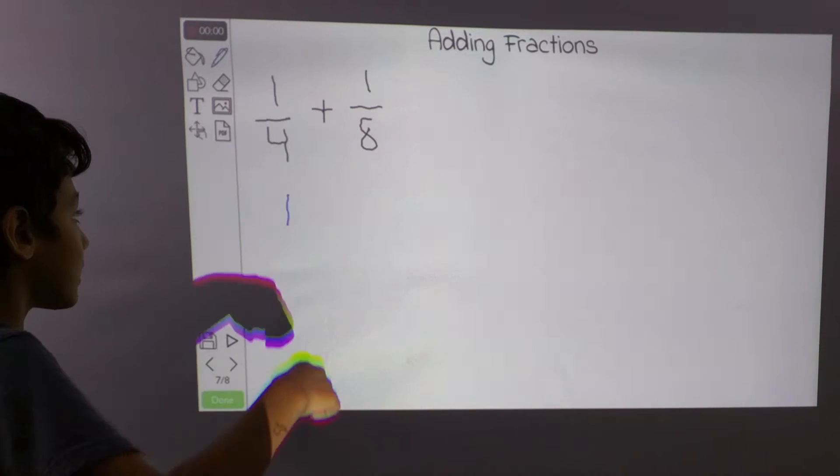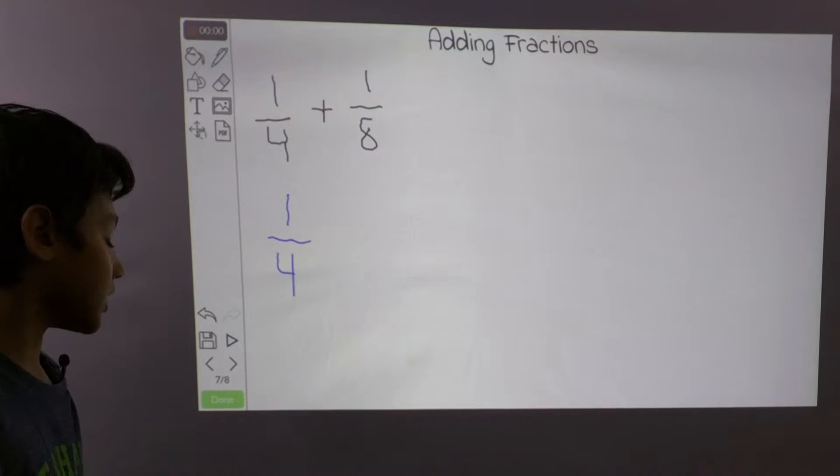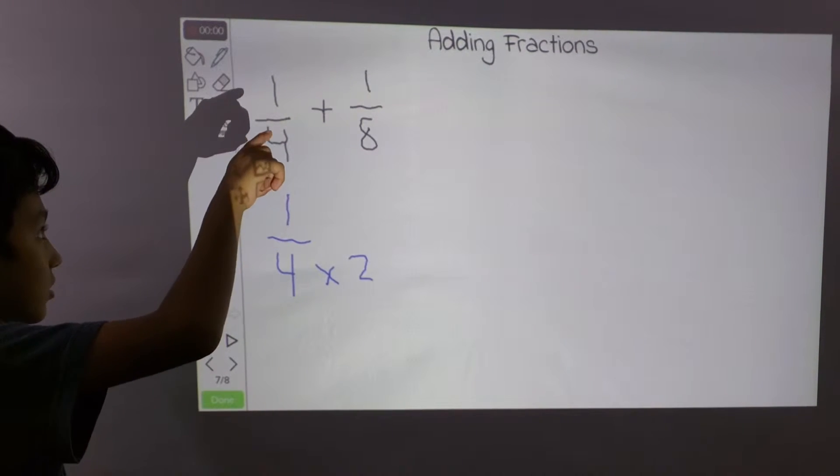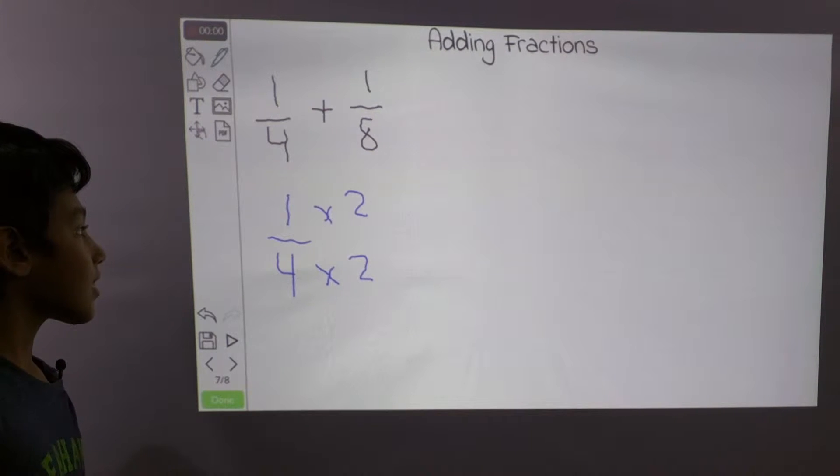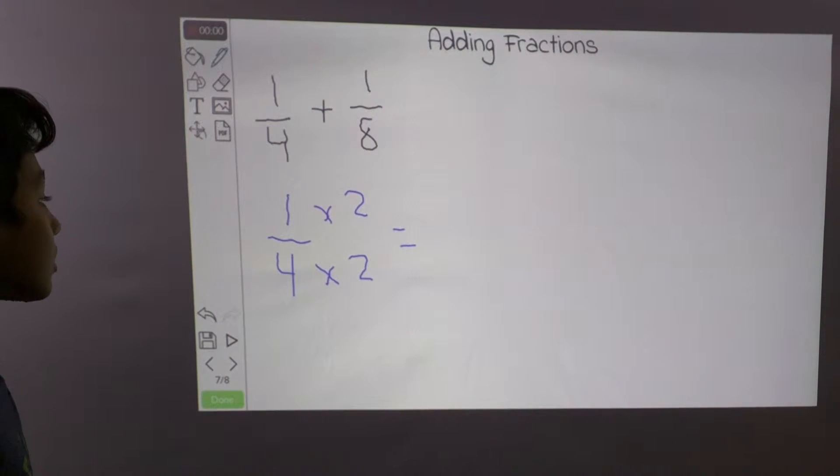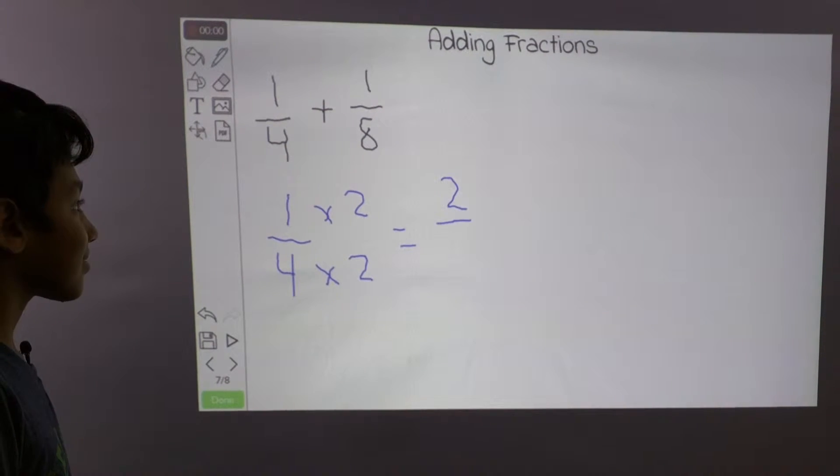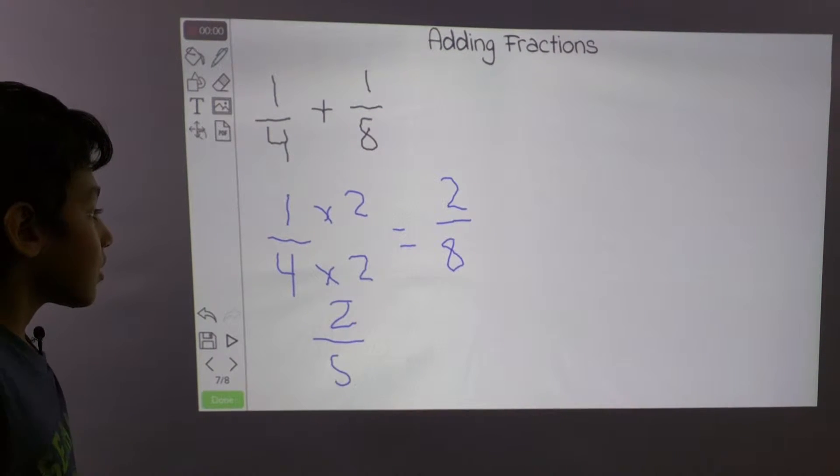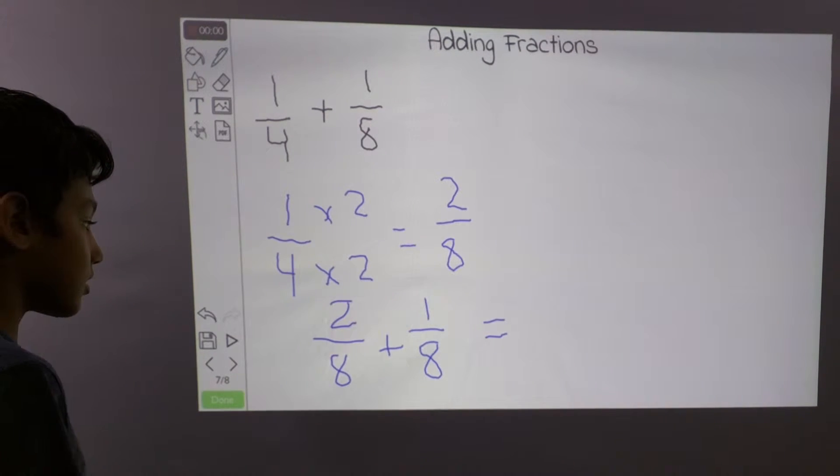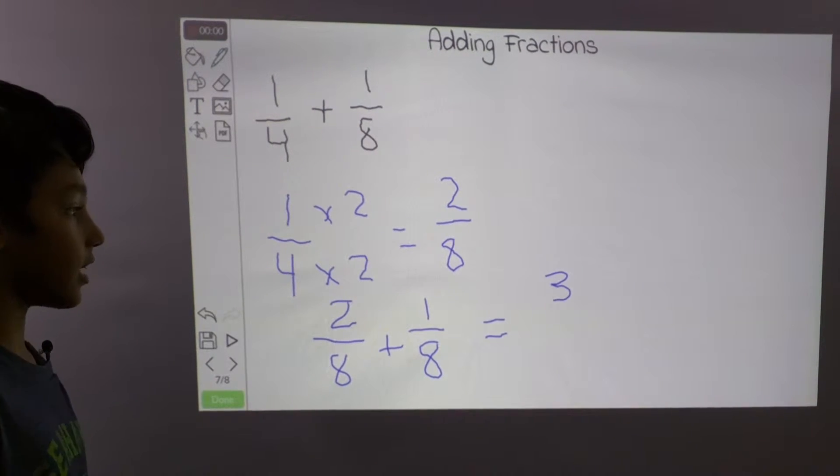So we multiply 2 by this fraction. And remember, what you do to the bottom, you must also do to the top. So you have 2 over 8 plus 1 eighth, and you add the numerators, and you get 3 over 8.